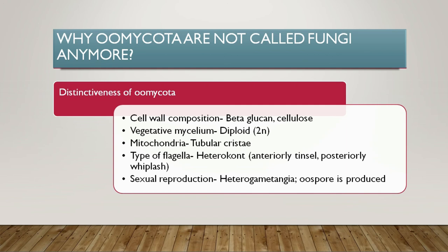The vegetative mycelium of Oomycota is diploid in nature — the nucleus is diploid — whereas in true fungi we have dikaryotic or monokaryotic mycelium, essentially haploid nuclei. Regarding mitochondria, in Oomycota pathogens the mitochondria have tubular cristae, whereas in true fungi the mitochondria have plate-like cristae. The cristae are the inner membrane invaginations that increase surface area for metabolic reactions.